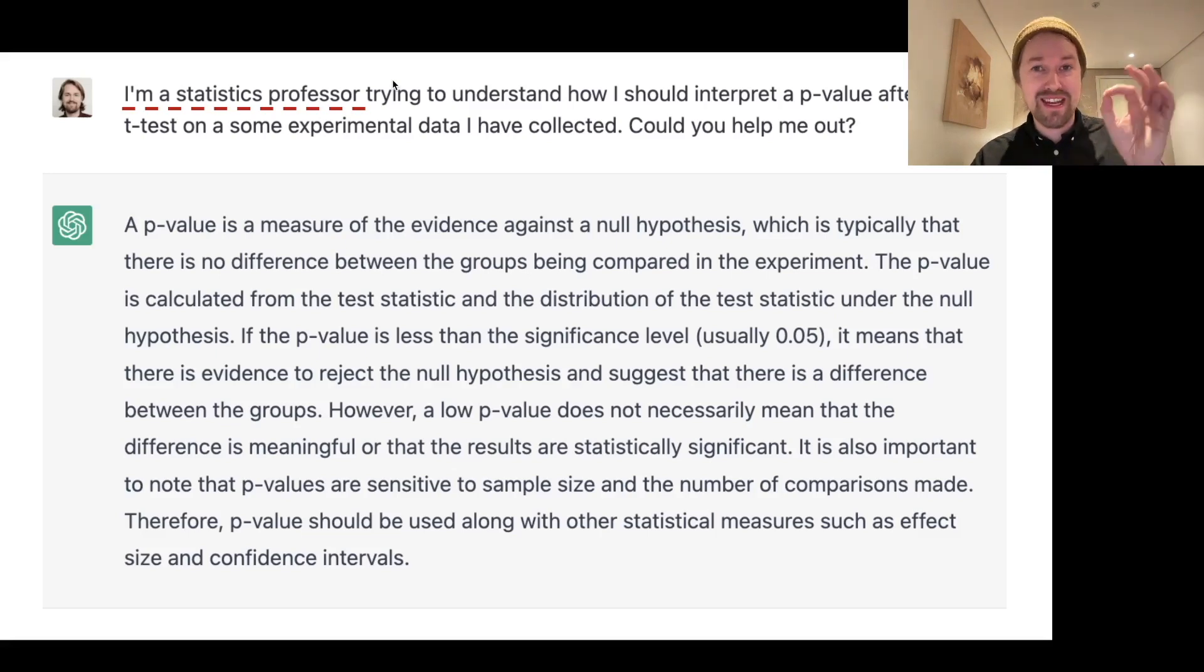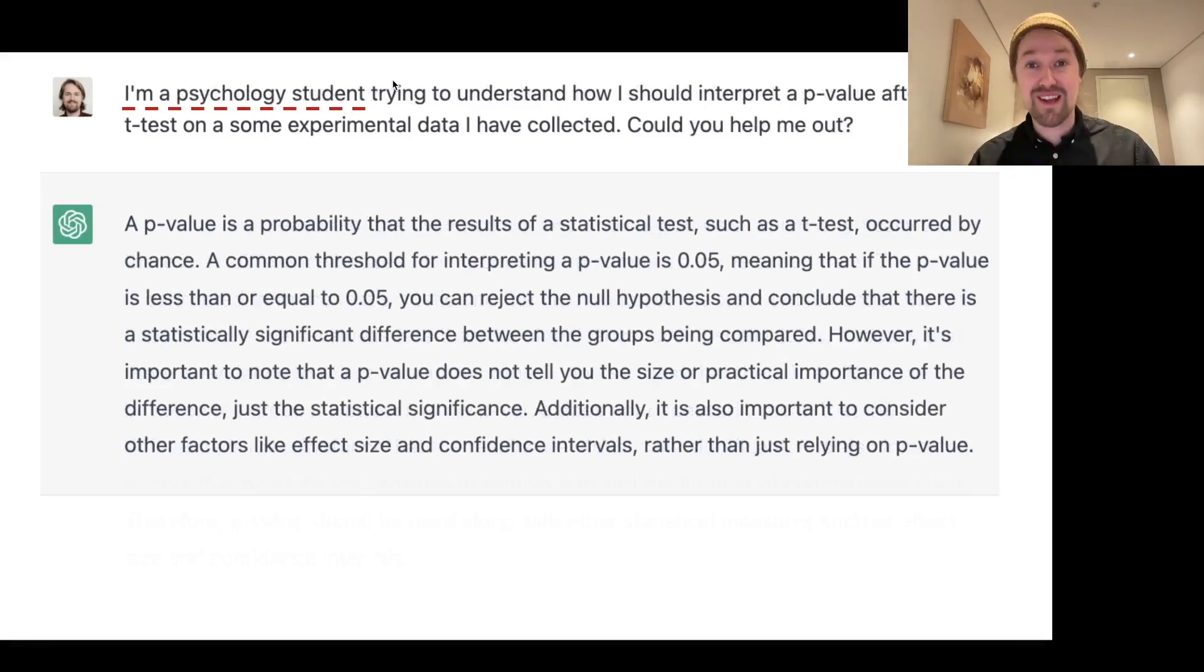So, if I just change this prompt a tiny bit, here I'm a psychology student, a confused psychology student trying to understand p-values. With this prompt, I now get nonsense again. I get things like, a p-value is a probability that the results occurred by chance, and so on.